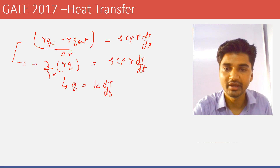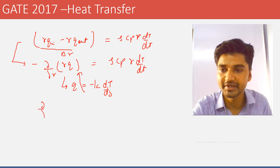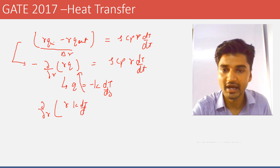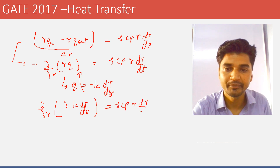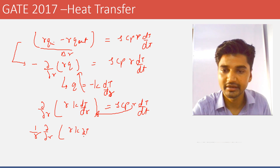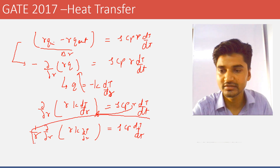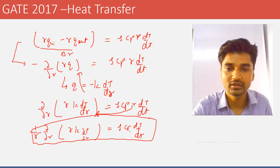The flux can be expressed as k·dT/dy. Substituting this into the equation and differentiating, the minus signs cancel, giving ∂/∂r(r·k·dT/dr) equals rho·cp·r·dT/dt. Dividing by r, we get (1/r)·∂/∂r(r·k·∂T/∂r) equals rho·cp·dT/dt.